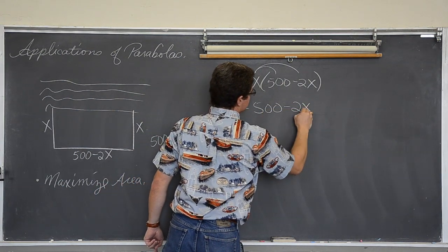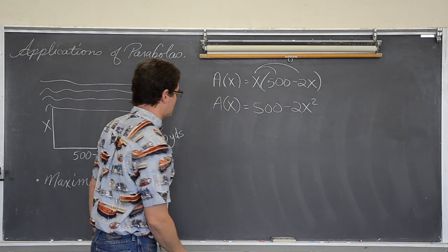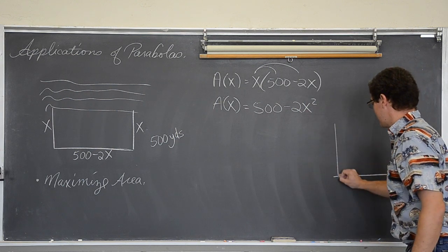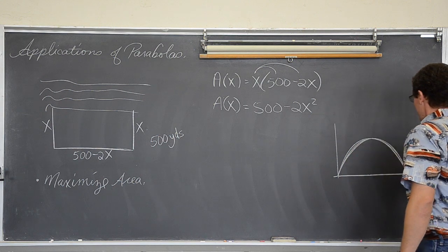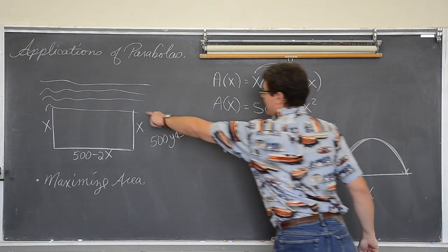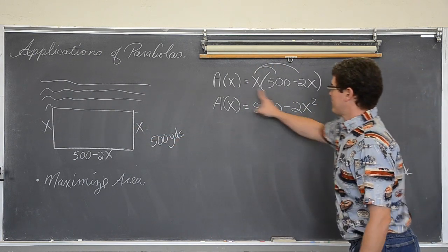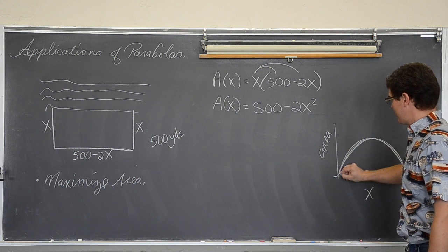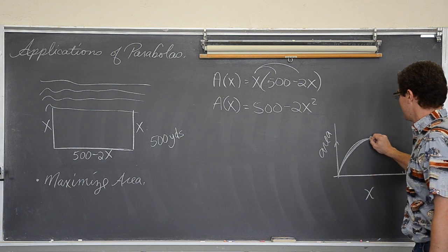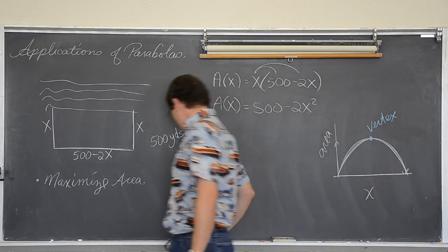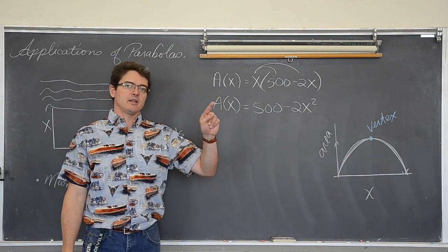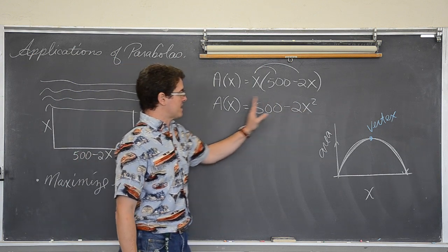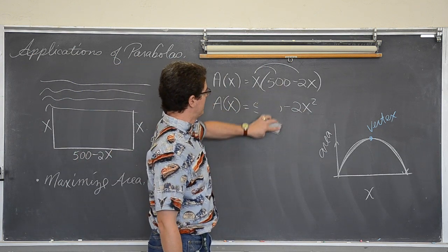The length of the side — how far we are from the river — x is going to be on the x-axis, and the formula gives us the area on the y-axis. We want to maximize the area, so we want to find the vertex of this parabola. It is easy to do that with a graphing calculator — you hit second calculate and ask it to find a relative maximum. But we are going to find the vertex by hand. The x of the vertex is, again, -b over 2a.